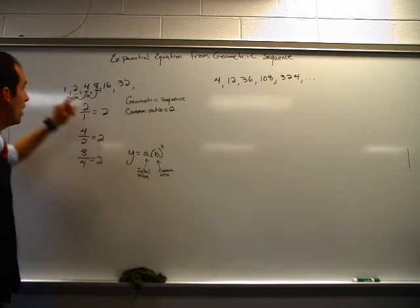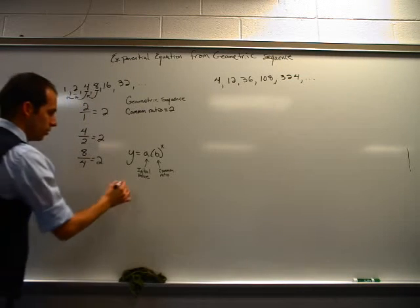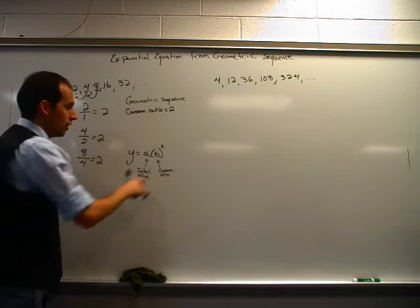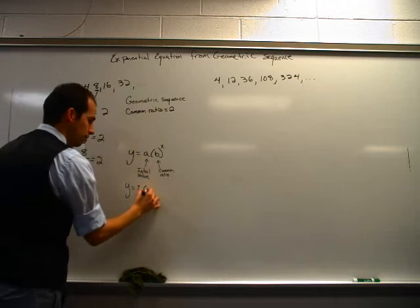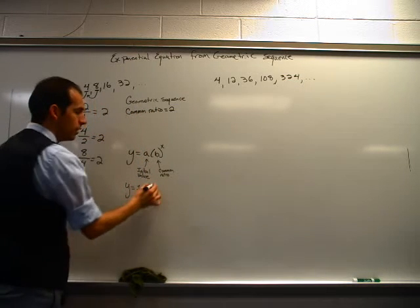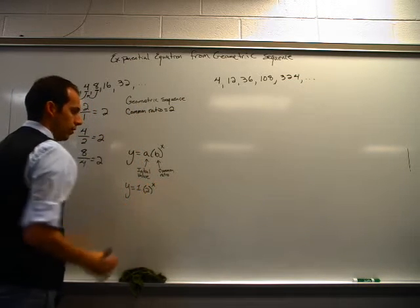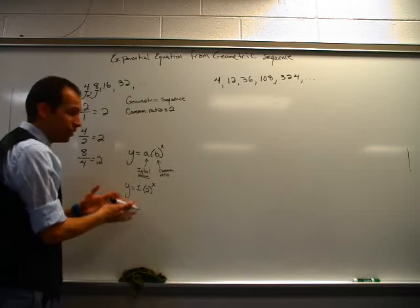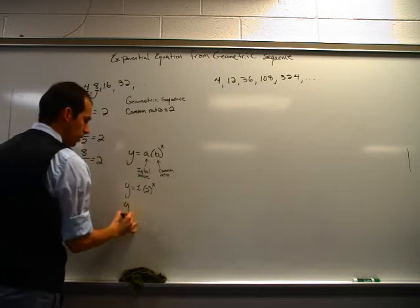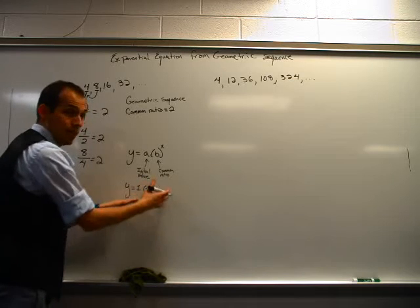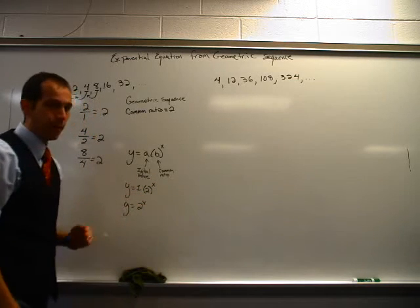All right, well the initial value in this sequence is 1, so that's pretty easy. The common ratio is 2, also quite easy. 2 to the x power. So the equation for this particular sequence is y = 2^x.